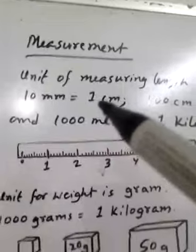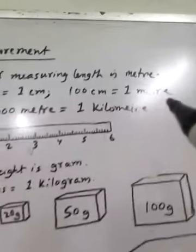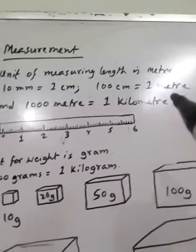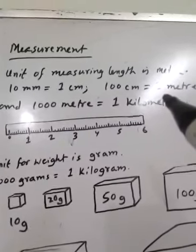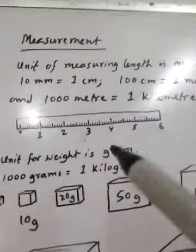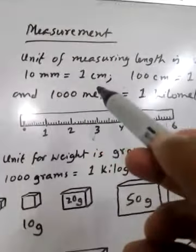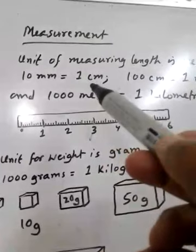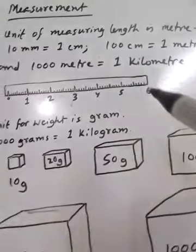Measurement. The unit of measuring length is meter. To measure any length or breadth, we use meter. We have to learn: 10 mm equals 1 centimeter, 100 centimeters equals 1 meter, and 1000 meters equals 1 kilometer.